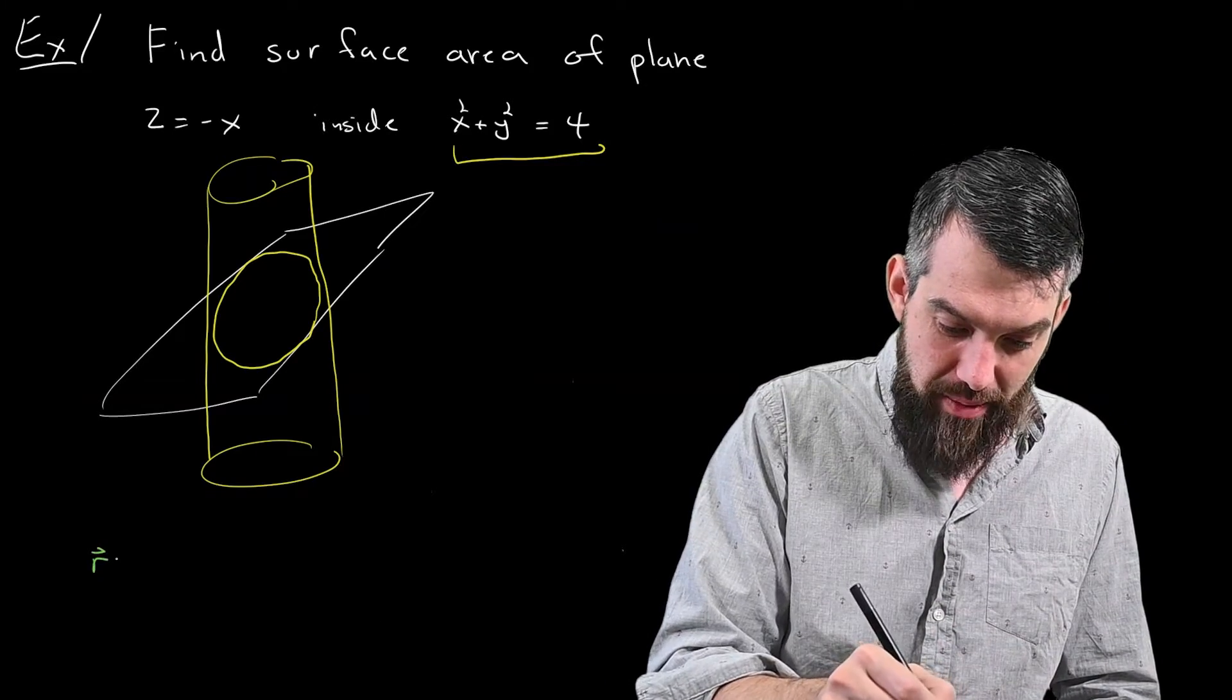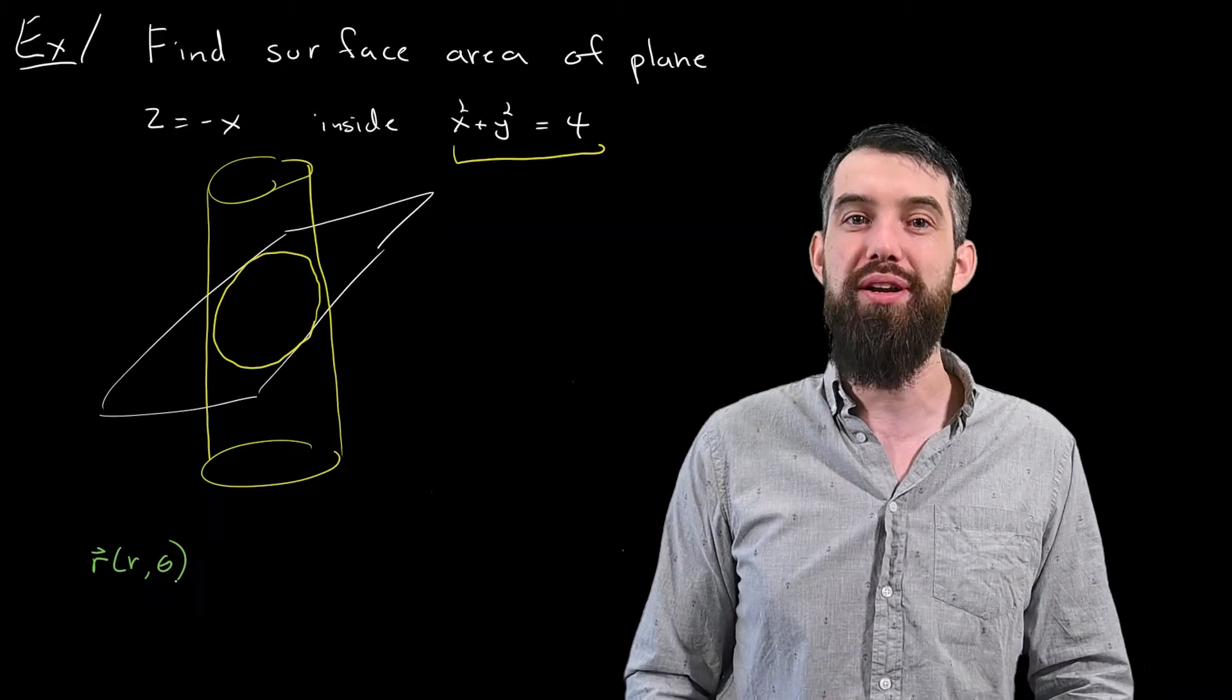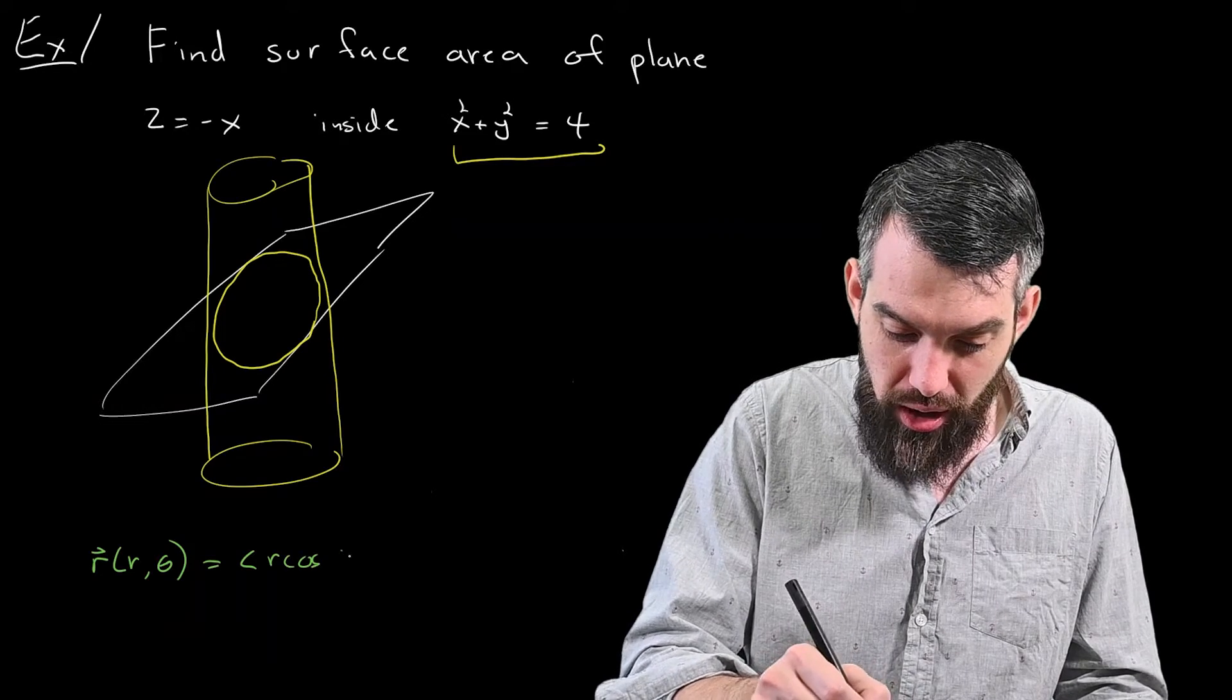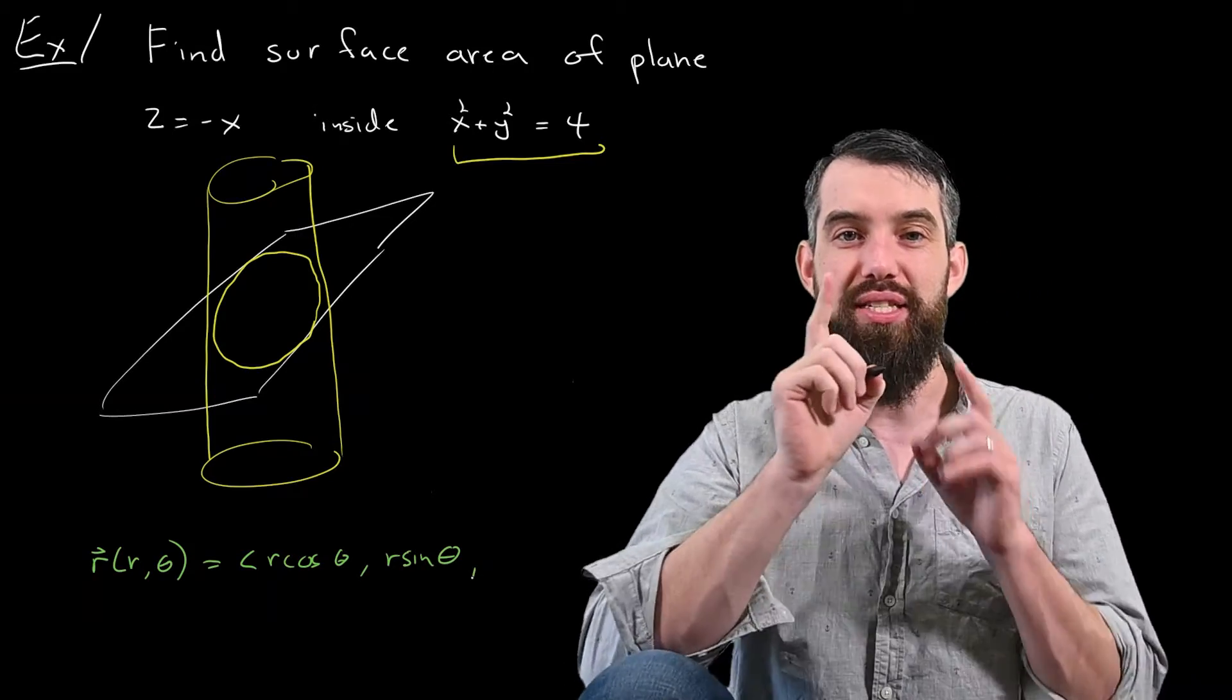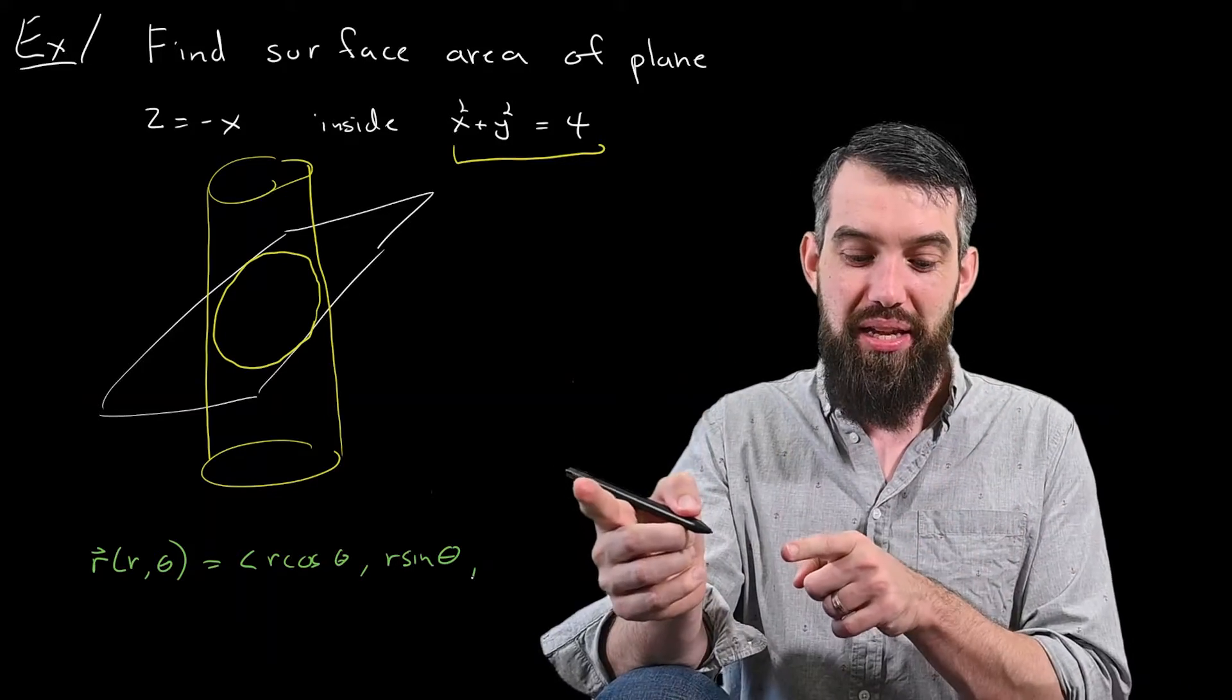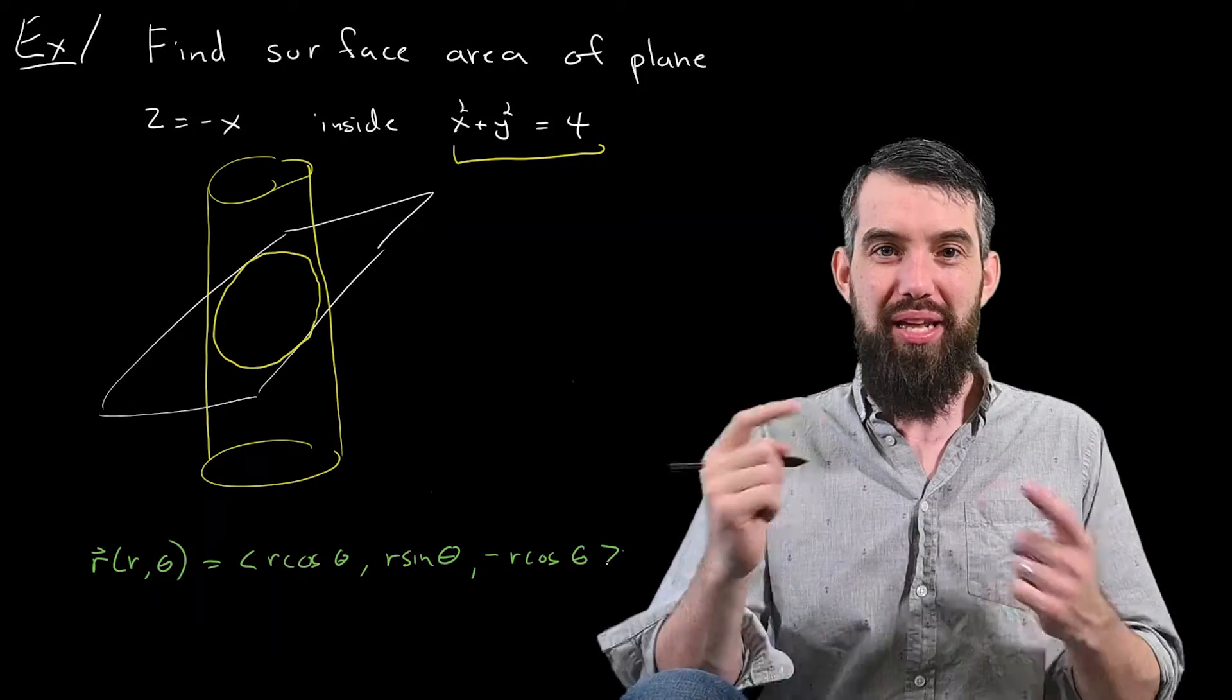So I'm going to parameterize it as follows. I'm going to say that my position function as a function of r and theta, so I'm going to use standard polar coordinates, is going to be written as r cosine of theta in the i hat component, r sine of theta in the j hat. And then what should I do for the z component? Well, z is minus x, x is r cos theta, and so that's minus r cosine of theta.